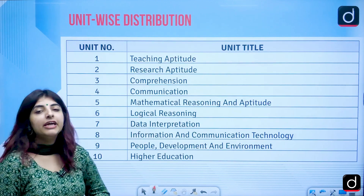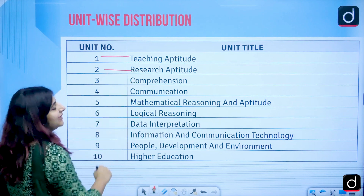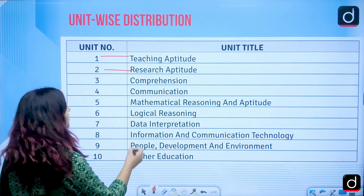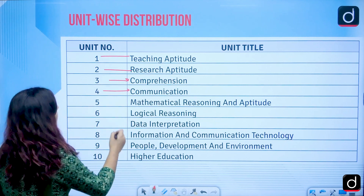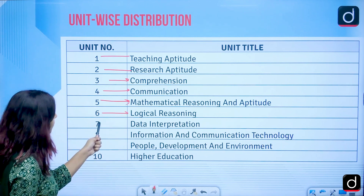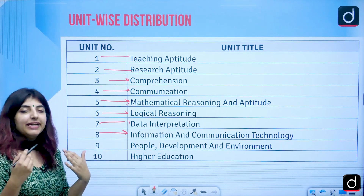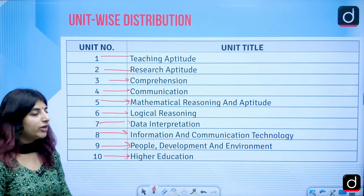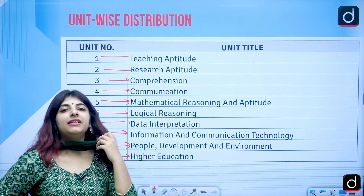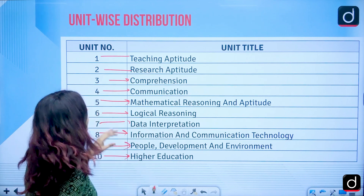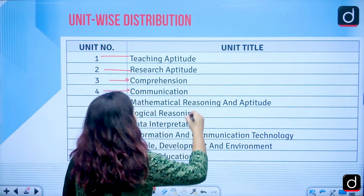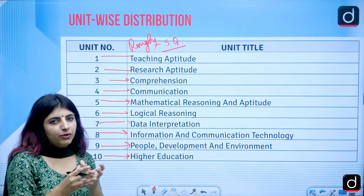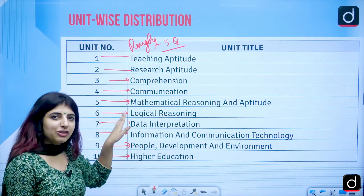There are 10 units in Paper 1. Unit 1 is Teaching Aptitude, Unit 2 is Research Aptitude, Unit 3 is Comprehension, Unit 4 is Communication, Unit 5 is Mathematical Reasoning and Aptitude, Unit 6 is Logical Reasoning, Unit 7 is Data Interpretation, Unit 8 is ICT (Information and Communication Technology), Unit 9 is People, Development and Environment, and Unit 10 is Higher Education. Roughly 5 questions come from each unit, making 50 questions total.